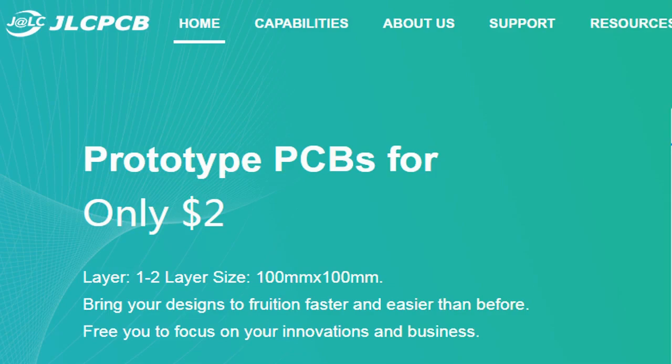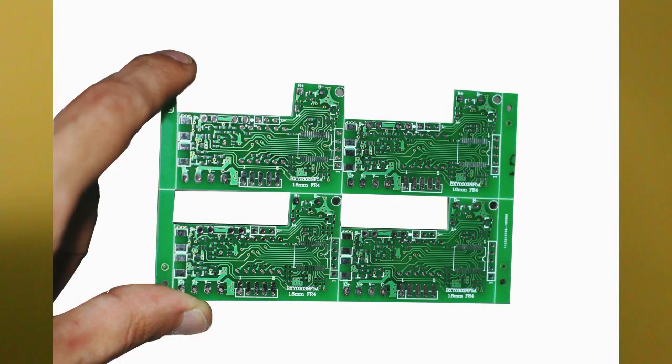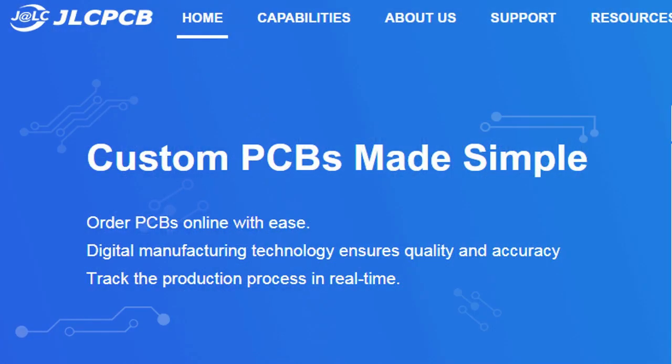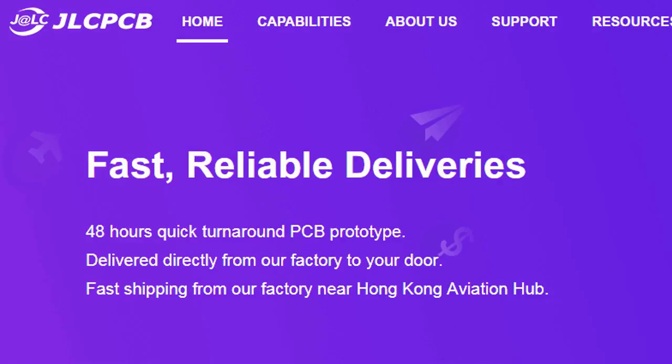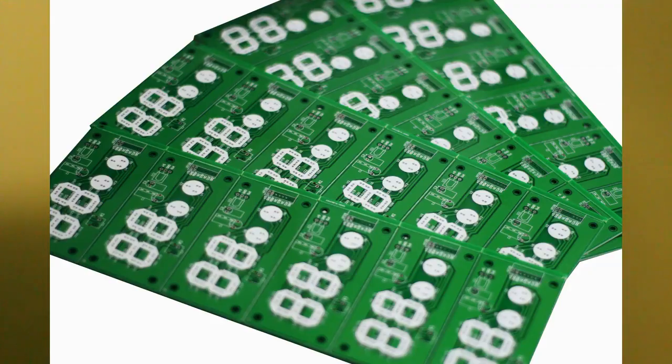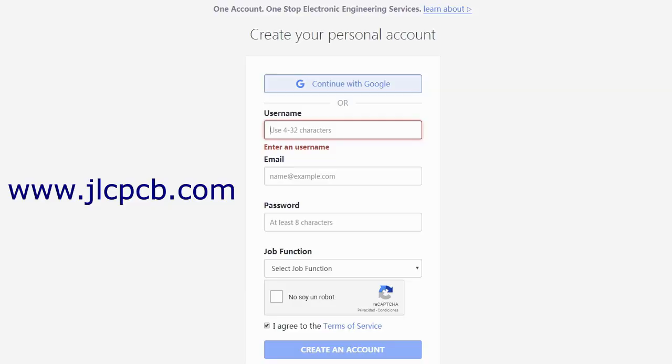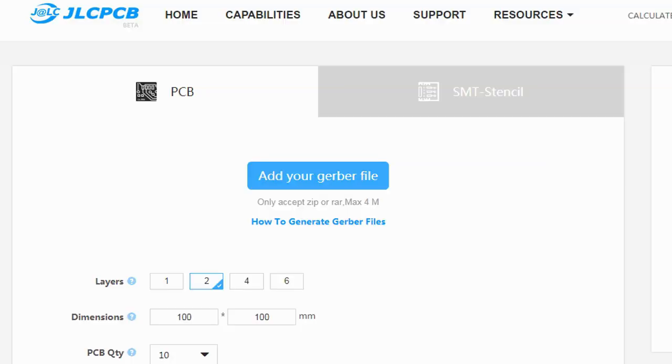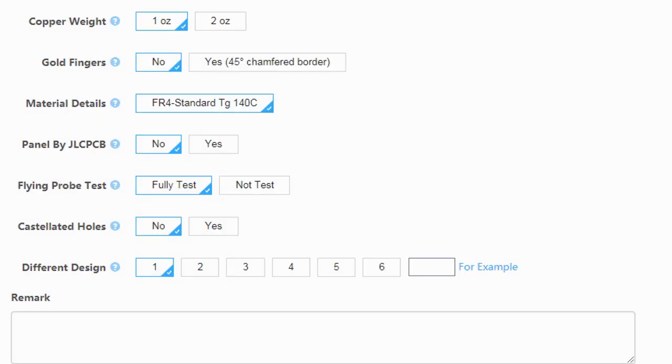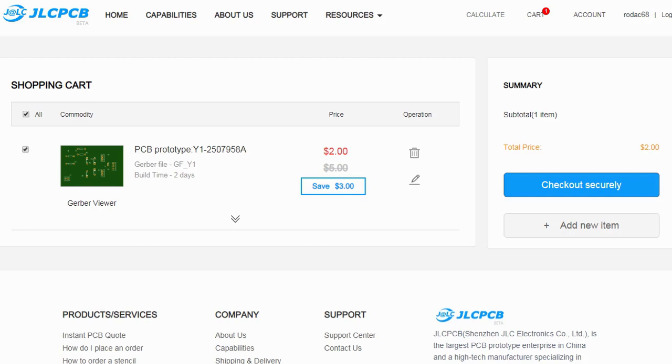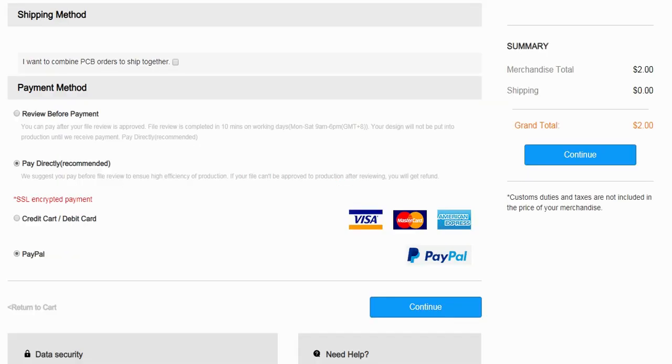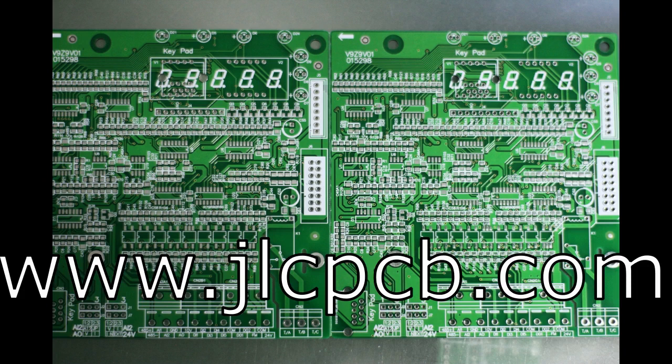This video is sponsored by JLCPCB. JLCPCB is a company that makes excellent quality PCBs at an unbeatable price. You can order boards online in minutes. After registration, upload your Gerber files, select the PCB properties, select the payment method and place your order. Best price and quality for all your PCB needs.